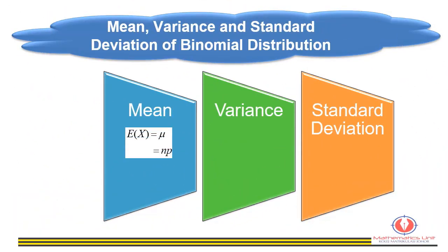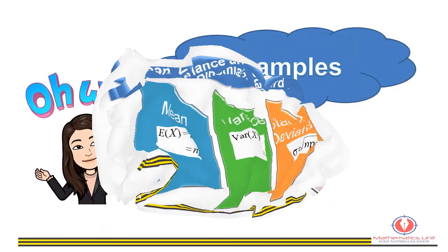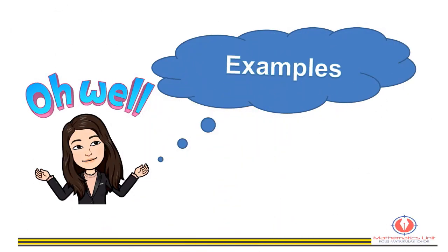The mean of a binomial distribution, called the expected value, is μ = np. The variance σ² = npq, and the standard deviation is σ = √(npq).